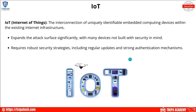IoT — Internet of Things — refers to any device built for a specific purpose, like a smart TV, a smart fridge, or a smart HVAC system. These are embedded computing devices within our infrastructure that need internet access to function. From a security perspective, IoT devices typically have bad defaults: weak permissions and weak settings that need to be hardened. IoT significantly expands our attack surface due to the number of devices, open ports, and lack of security emphasis. To mitigate this, always segment these devices, apply proper hardening, and perform vulnerability scanning.